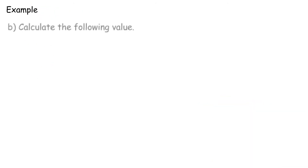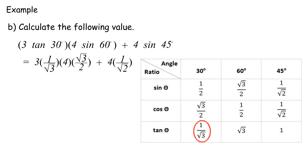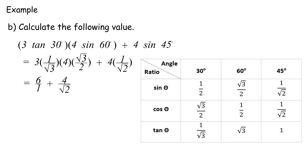Example B: Calculate the following value. 3 tan 30° times 4 sin 60° plus 4 sin 45°, equals 3 times 1 over √3 times 4 times √3 over 2 plus 4 times 1 over √2, equals 6 over 1 plus 4 over √2, equals 6 plus 4 over √2 times √2 over √2.